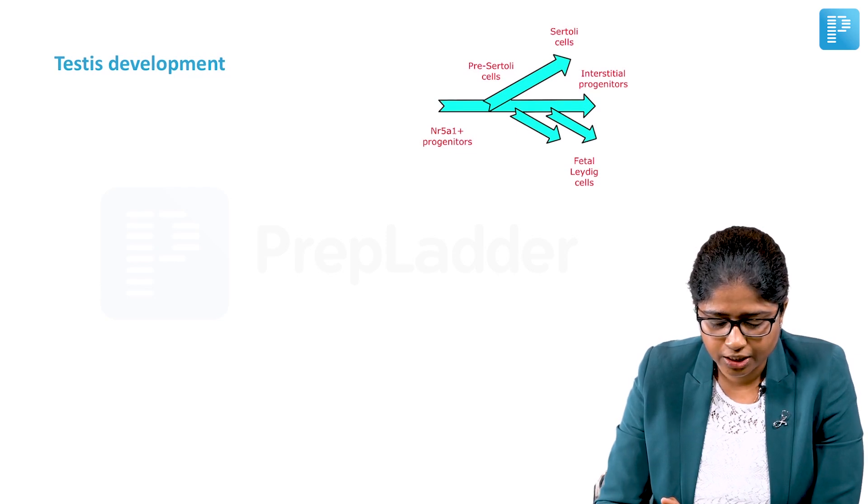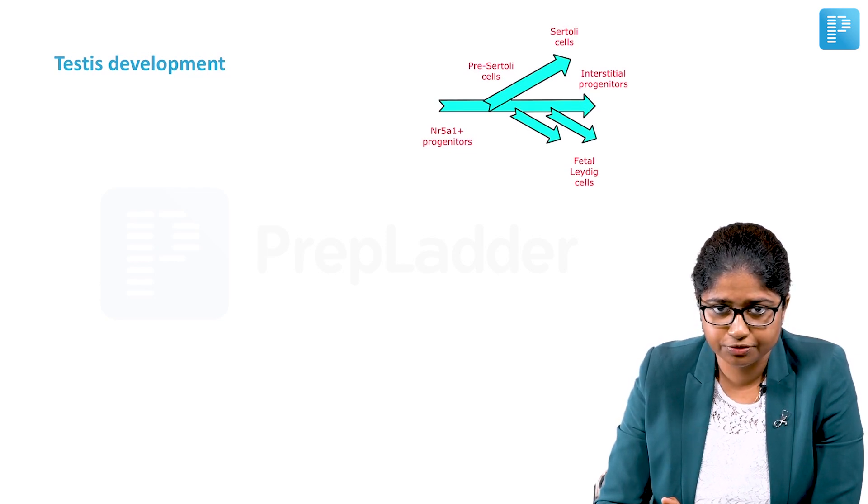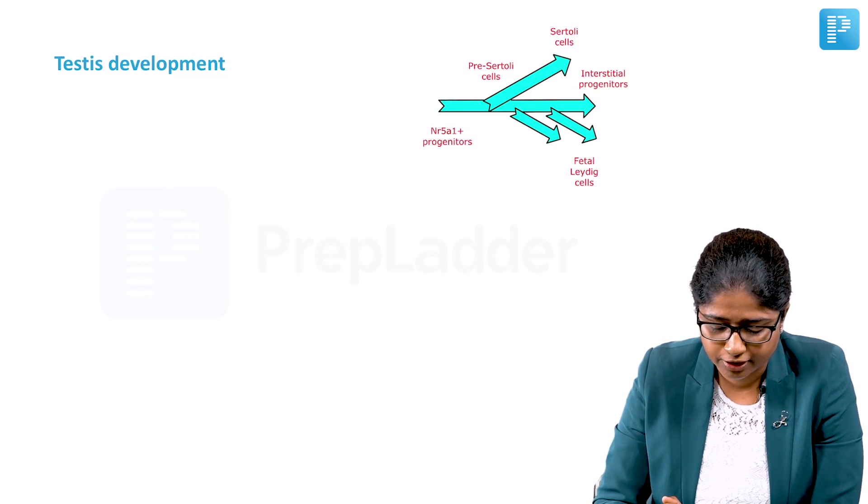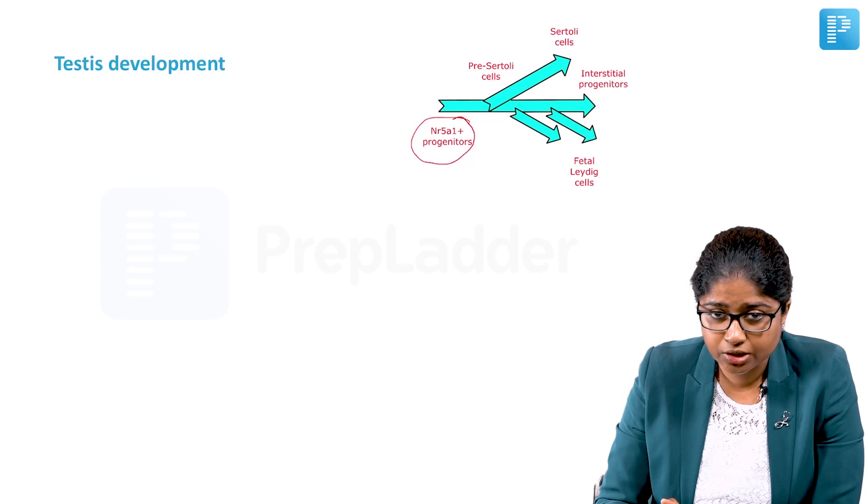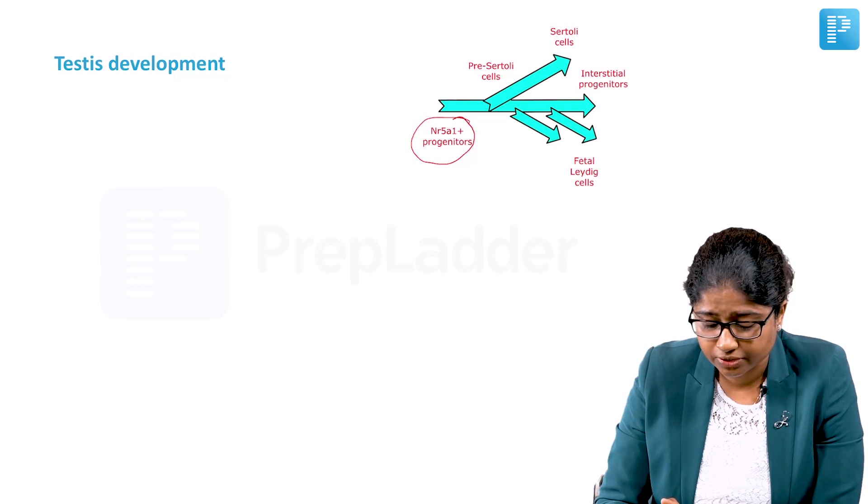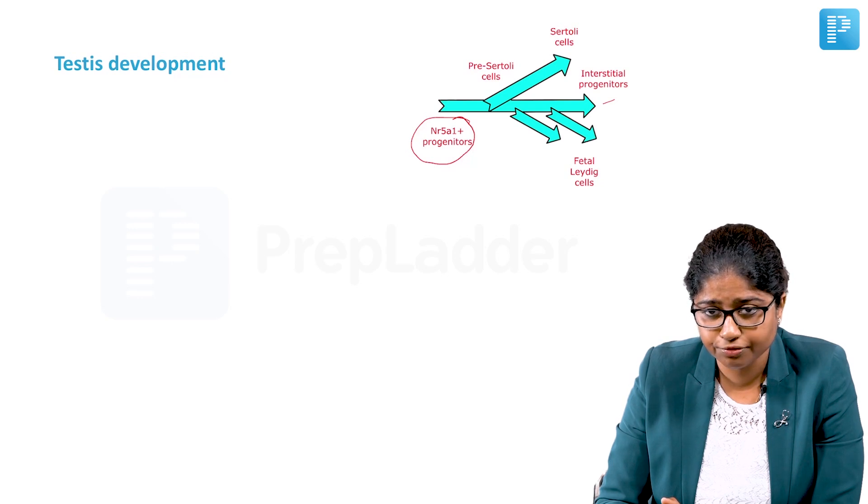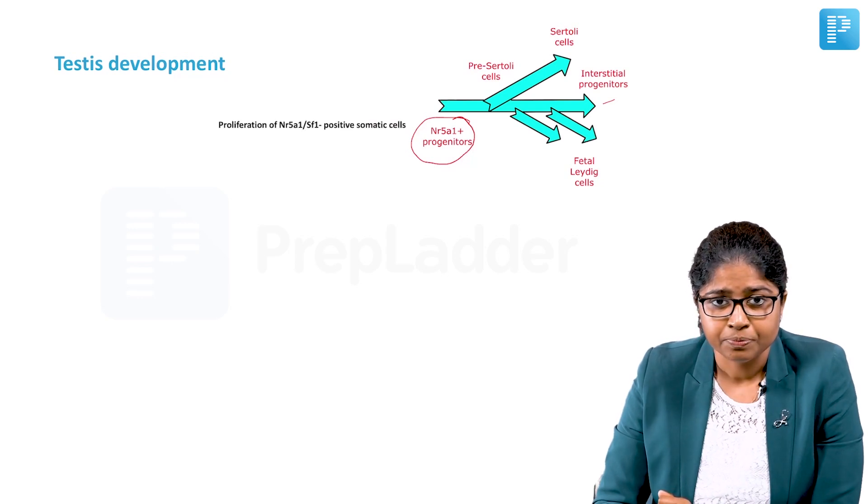This is a chart which is going to show you how the testicular differentiation occurs. You have these NR5A1 positive progenitor cells which differentiate into the pre-Sertoli cells and the Sertoli cells, and you have the interstitial progenitors which then differentiate into the fetal Leydig cells.